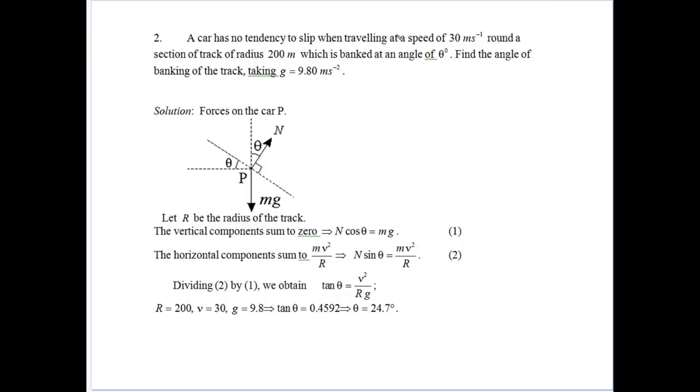So the next one. Again, we've got a car having no tendency to slip, which means we don't have to worry about a frictional force, because if there's no tendency to slip, then it won't slide. So there's no friction. If it's a banked track radius 200 this time, and we don't know the angle of theta, we want to find that angle.